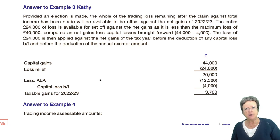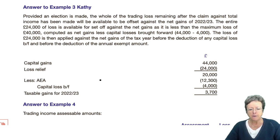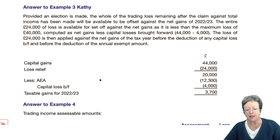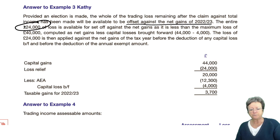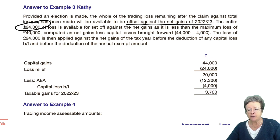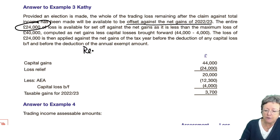Provided an election is made — because you're moving between income tax and capital gains tax — the whole of the trade loss remaining after the claim against total income can be set off against the gains in 2022-23, which is £24,000. The entire £24,000 of loss is available for set-off against the net gains, as it is less than the maximum loss of £40,000. The relevant amount is therefore £24,000.